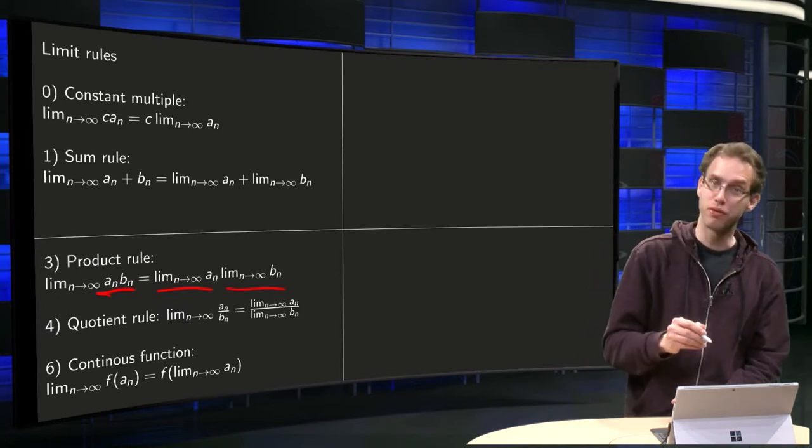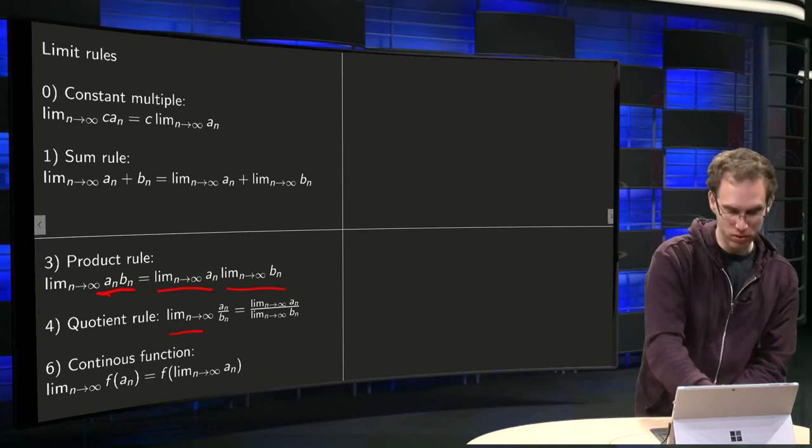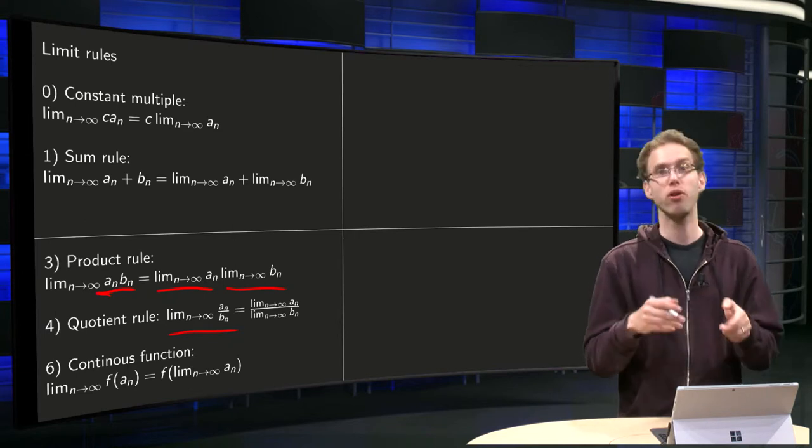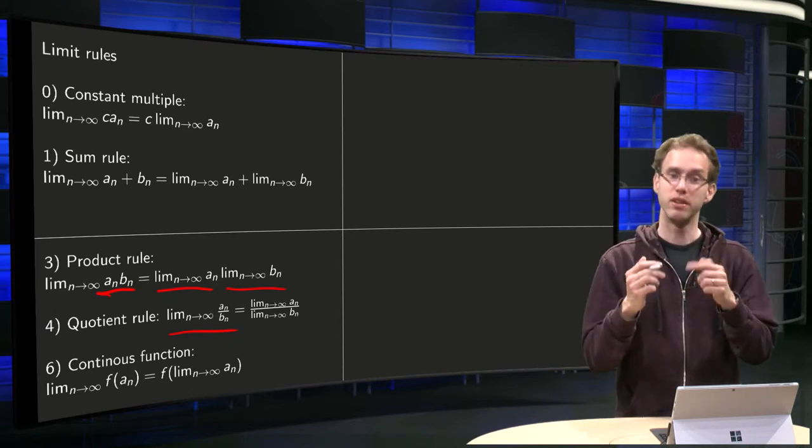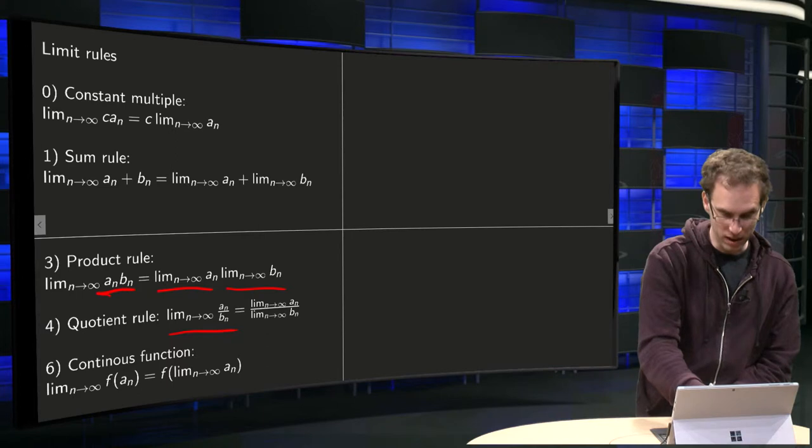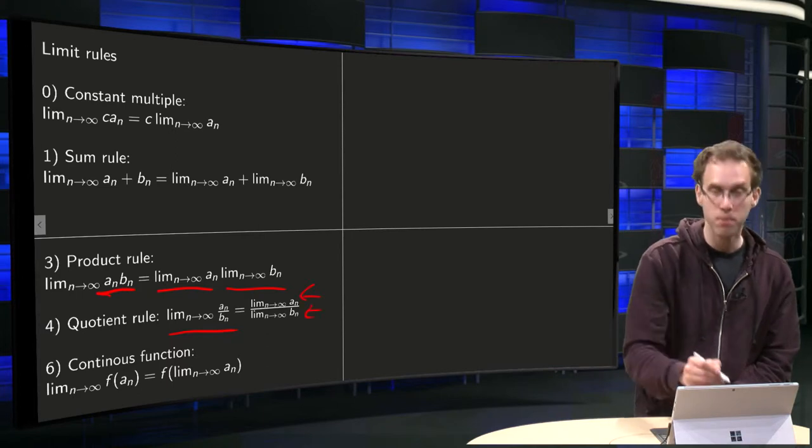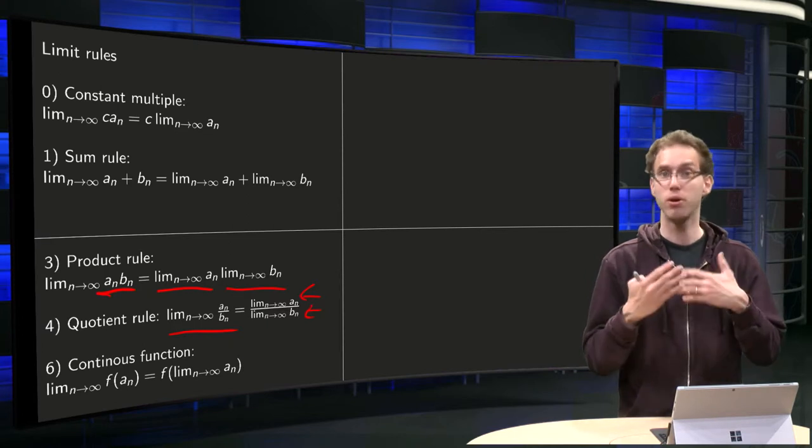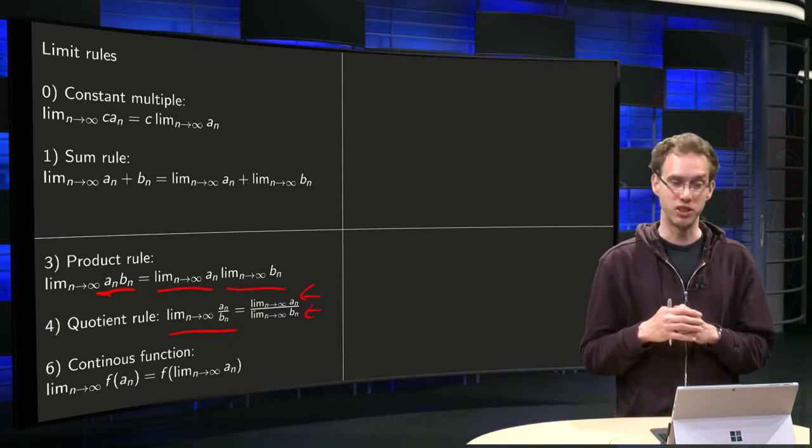And similarly for the quotient rule, limit n to infinity of a quotient an over bn, you can take quotient first, then limit, or first limit n to infinity an, and then divide by limit n to infinity bn, provided you are not dividing by zero, of course. Quotient rule, also the same as for limits of functions.